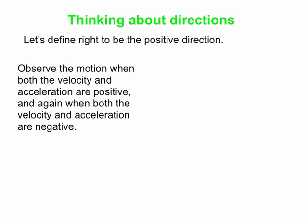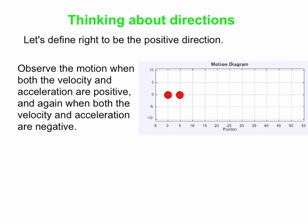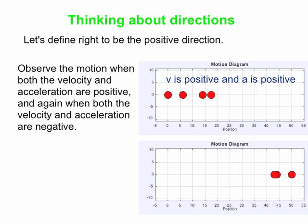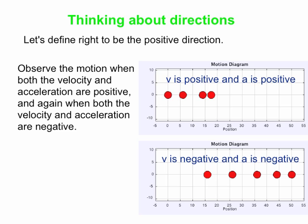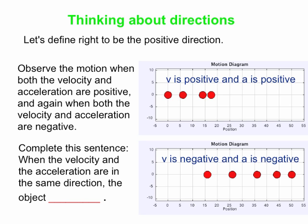First we're going to look at a motion where both the velocity and the acceleration are to the right, and we've defined right to be our positive direction. So in this motion, both the velocity and the acceleration are positive. You can see in the motion diagram that the dots start out pretty close together, and as the motion proceeds, the dots get further and further apart. Here's another motion where both the velocity and the acceleration are in the negative direction. It's really a mirror image of the first motion — the dots start out close together and then get further and further apart. When the dots on the motion diagram are getting further and further apart, that's consistent with the object gaining speed, moving faster.